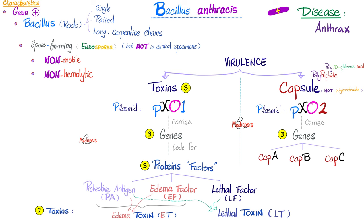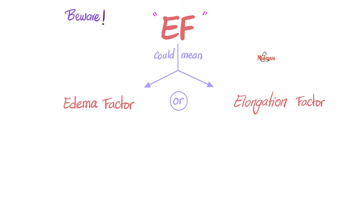As for the capsule, it's a polypeptide, not polysaccharide. What kind of polypeptide? Poly-D-glutamic acid. The plasmid PXO2 carries three genes — cap A, cap B, and cap C — for the capsule.